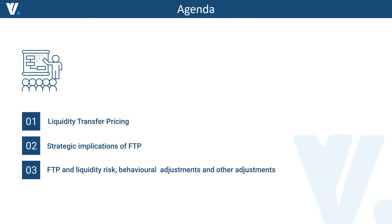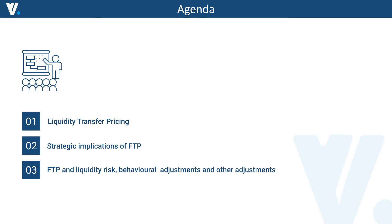What is the purpose of this webinar? I have quite a lot prepared and we have only one and a half hours, so I will need to move quickly. The objective is to provide you with an overview of the different aspects of FTP. By these aspects, I mean first of all we will tackle liquidity transfer pricing, and the strategic implications of FTP — mainly for shaping and steering the banking book through the FTP tool.